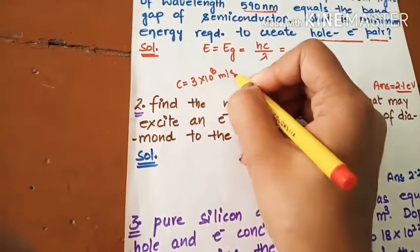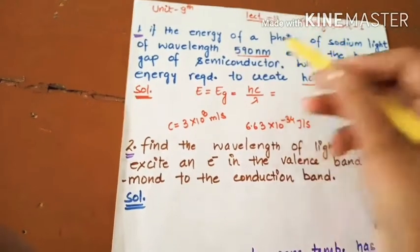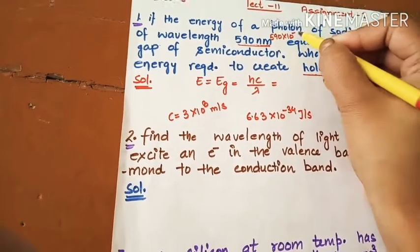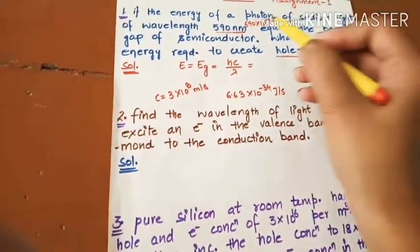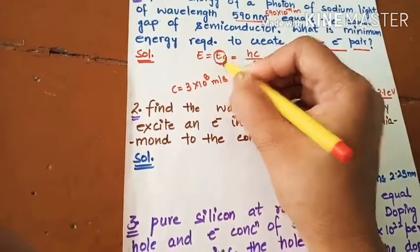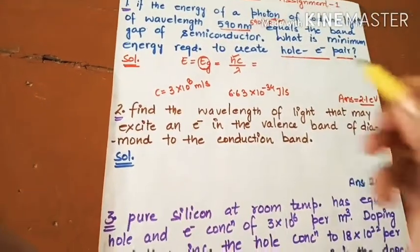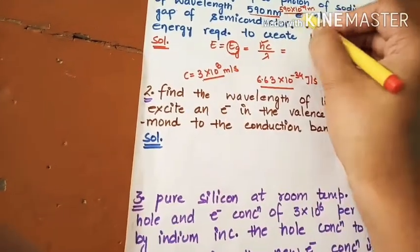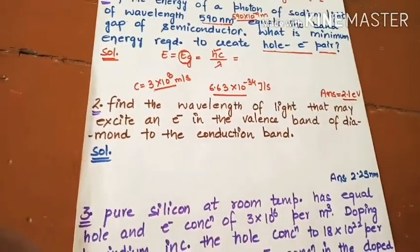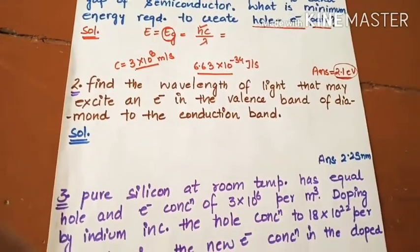The wavelength is 590 nanometer, converting to meters: 590 into 10 raised to power minus 9 meter. By putting these values, you calculate the minimum energy by putting the H value, C value, and lambda value. You can calculate this value. It means energy gap, you can find out 2.1 electron volt.